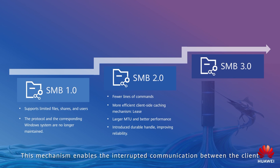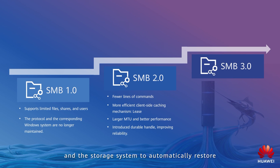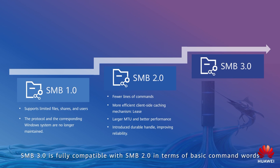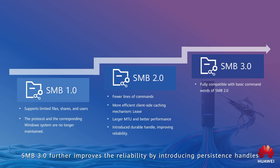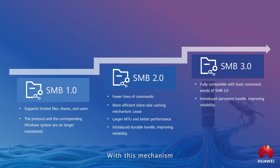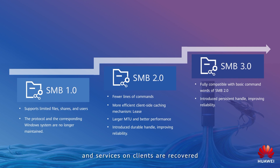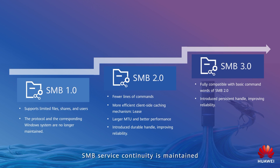The durable handles mechanism enables interrupted communication between the client and the storage system to automatically restore. SMB 3.0 is fully compatible with SMB 2.0 in terms of basic command words. SMB 3.0 further improves reliability by introducing persistent handles. With this mechanism, if a controller fails, services can be quickly switched to another controller and services on the clients are recovered, maintaining SMB service continuity.